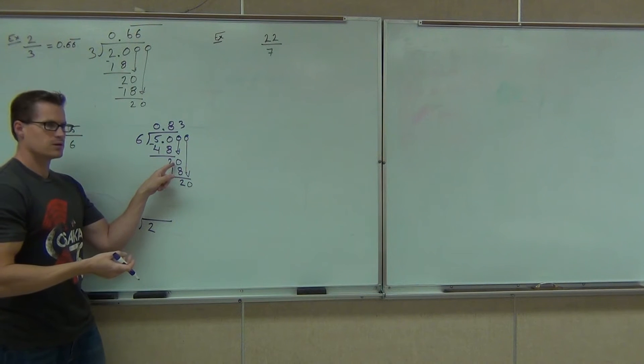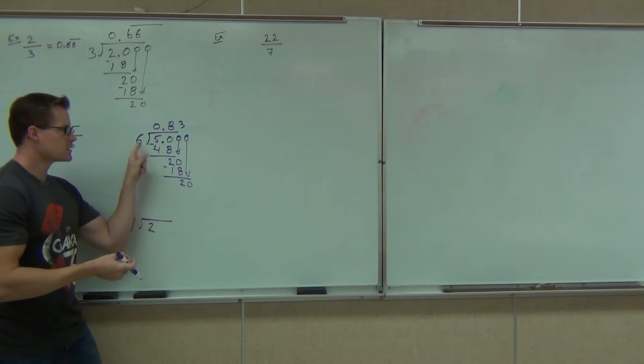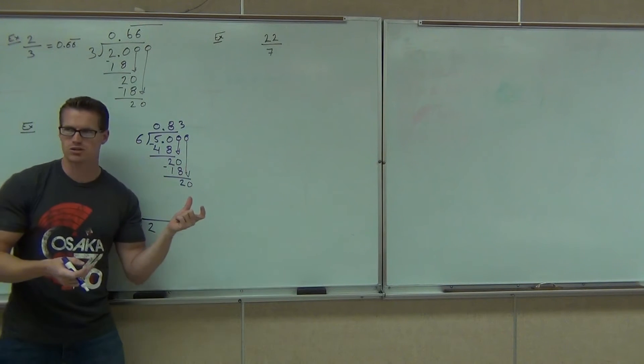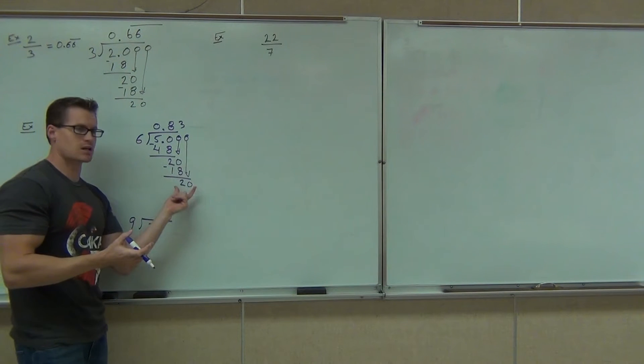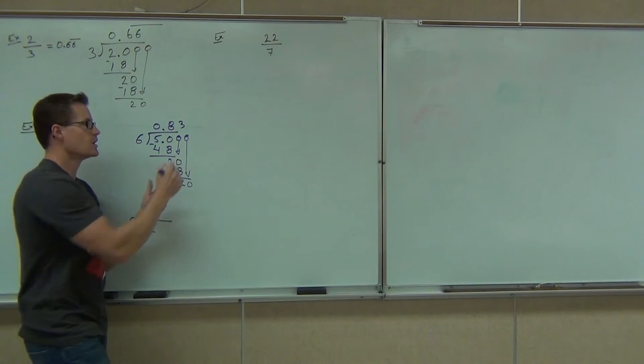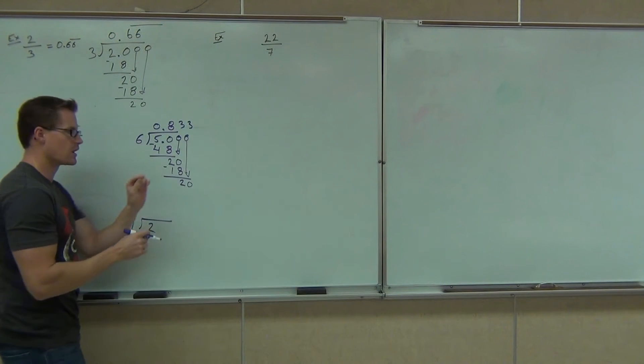Here we got 20. Notice six went into 20 three times. We got 18. We got 20 again. Six is going to go into 20, it's not going to change. If it goes into 20 three times, it's going to continue going into 20 three times. So you could show another one. You need to show at least two.